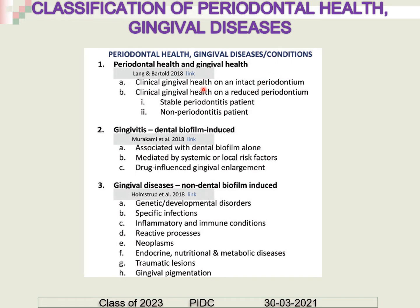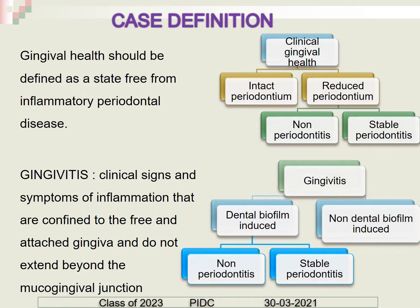This class will focus on gingivitis. There are two different types of gingivitis: dental biofilm-induced (plaque-induced) and non-dental biofilm-induced. Gingival health is defined as a state free of any inflammatory periodontal disease, whereas gingivitis is defined as clinical signs and symptoms of inflammation confined to the free and attached gingiva, not extending beyond the mucogingival junction. Gingivitis is classified as dental biofilm-induced and non-biofilm-induced, with dental biofilm-induced further classified as non-periodontitis and stable periodontitis.